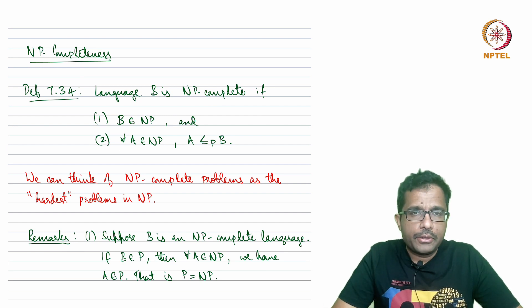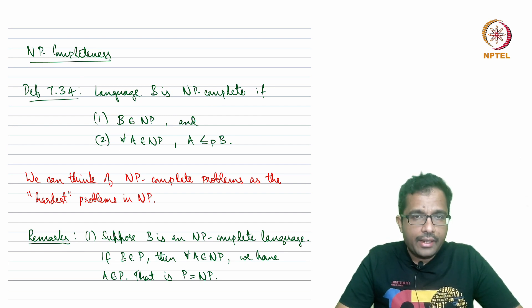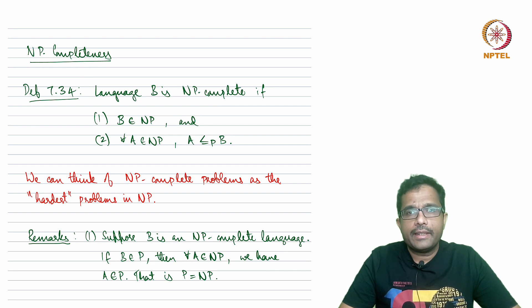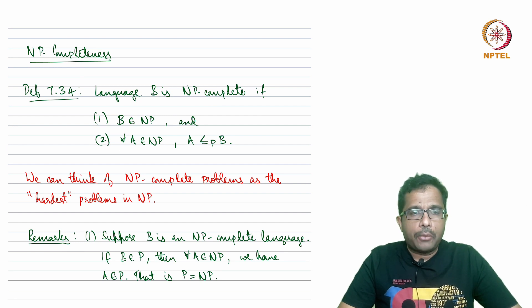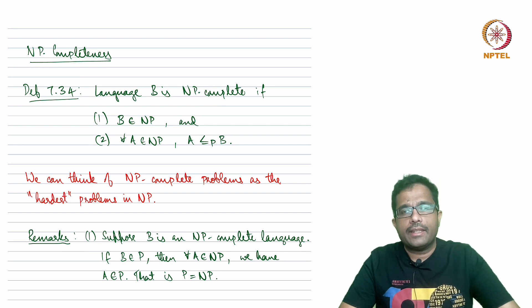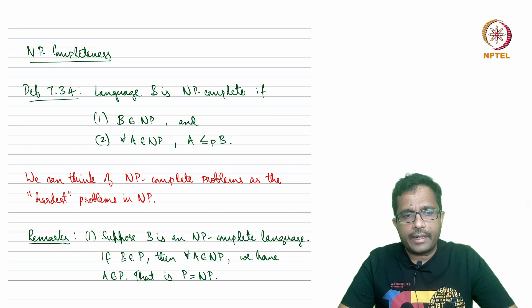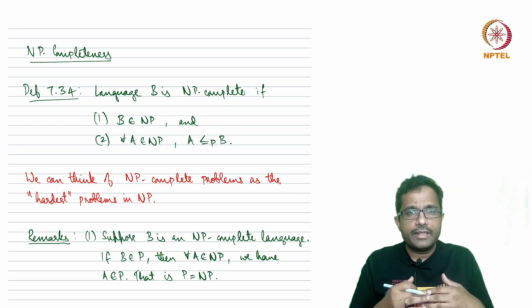Hello and welcome to lecture number 49 of the course Theory of Computation. This is going to be quick but a very important lecture. In the previous lecture we saw the notion of polynomial time reductions. We said that A is polynomial time reducible to B if there is a polynomial time computable function f such that whenever f takes a w that is in A it maps to something in B, and whenever f takes a w that is not in A it maps to something not in B. That is the notion of polynomial time reductions — exactly like mapping reductions, but with a polynomial time bound on the machine that computes the reduction.